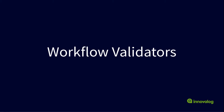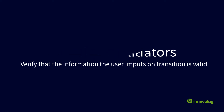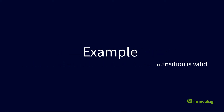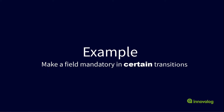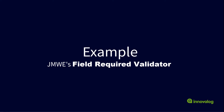Let's now move on to workflow validators. Workflow validators verify that the information that the user inputs on a transition screen is valid. A very common scenario is making a field mandatory during a certain transition. For that, you can use the built-in field required validator. But what if you want to make a field mandatory but only for certain issue types, or certain priorities? For that, you cannot use the built-in field required validator. You will need instead JMWE's version of that validator, which supports what we call conditional validation.